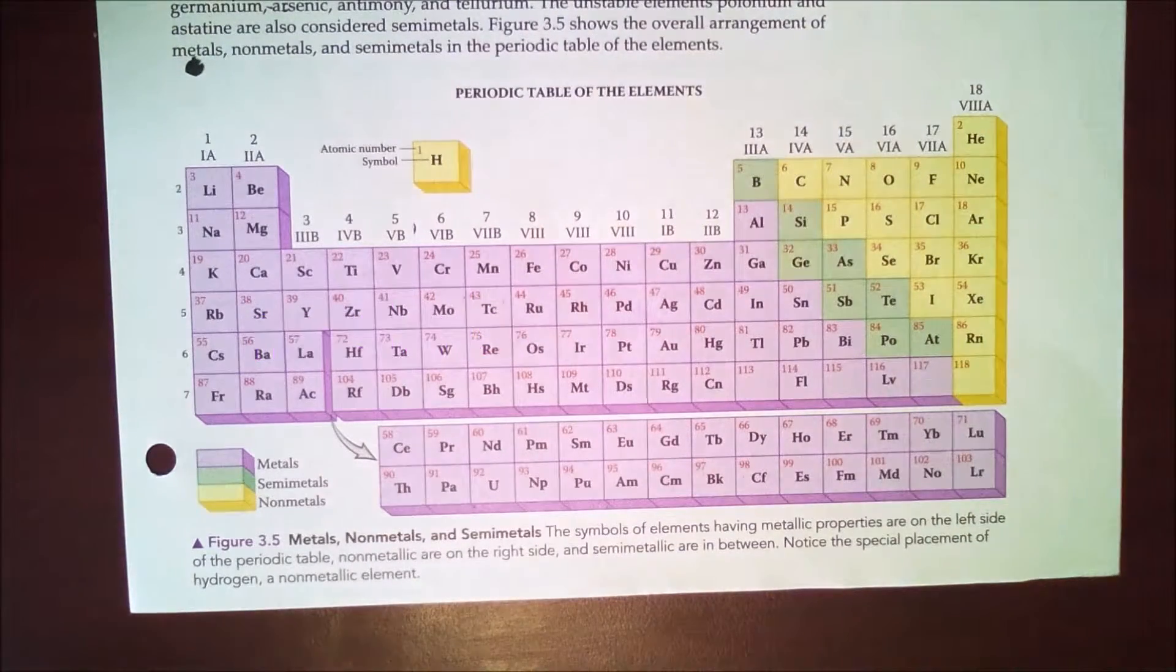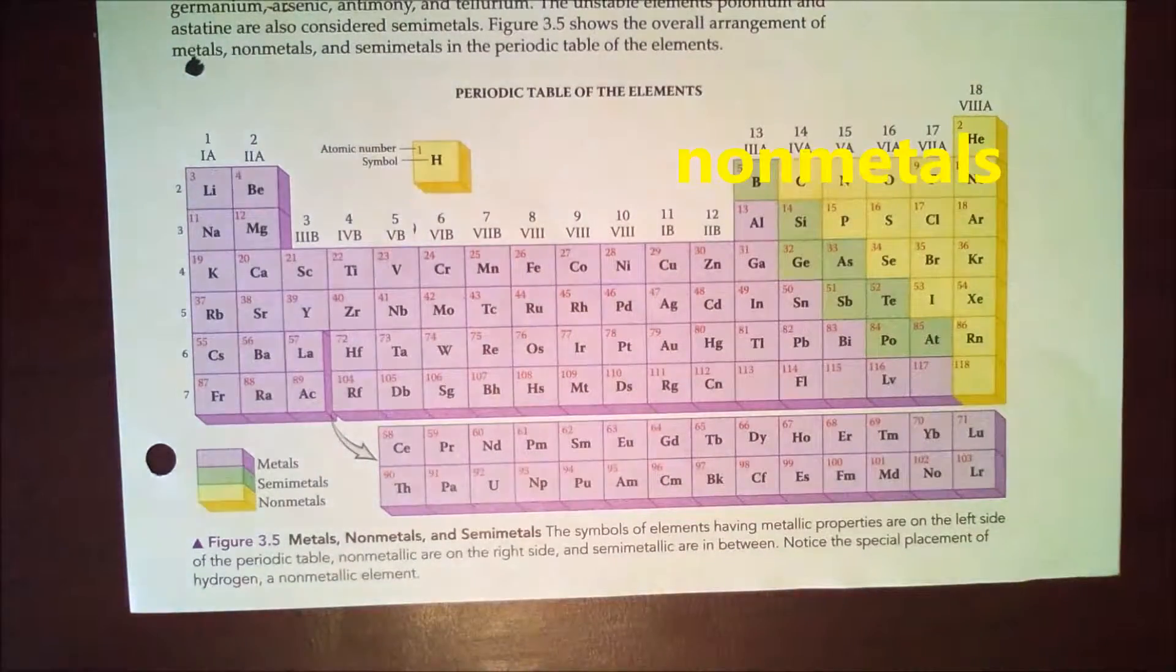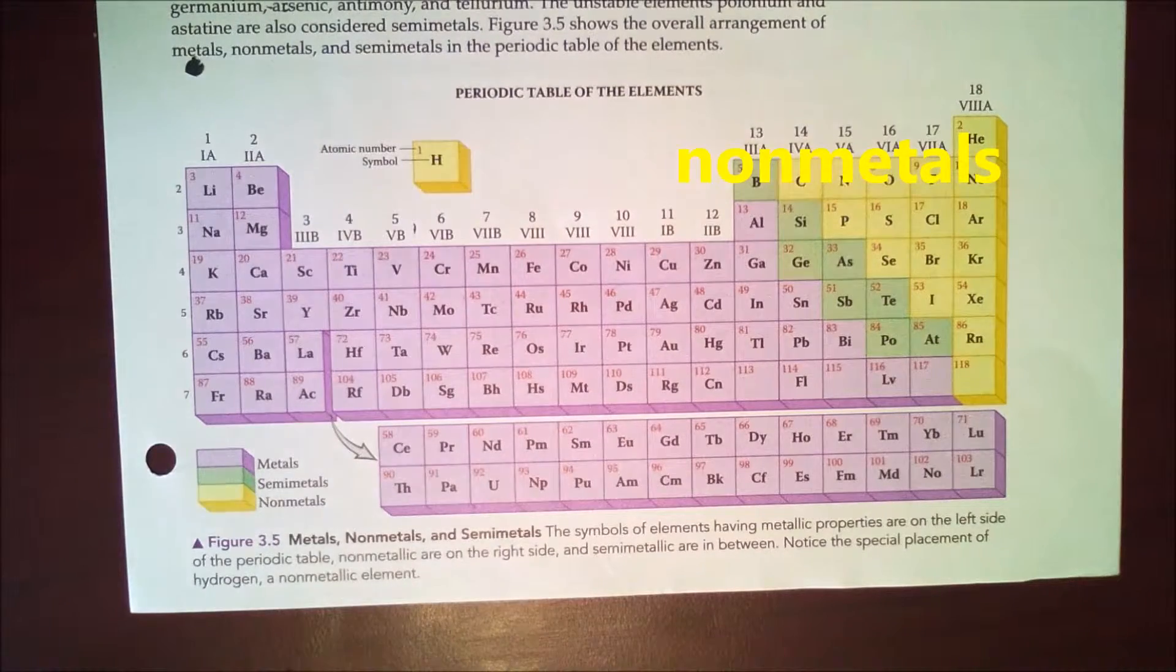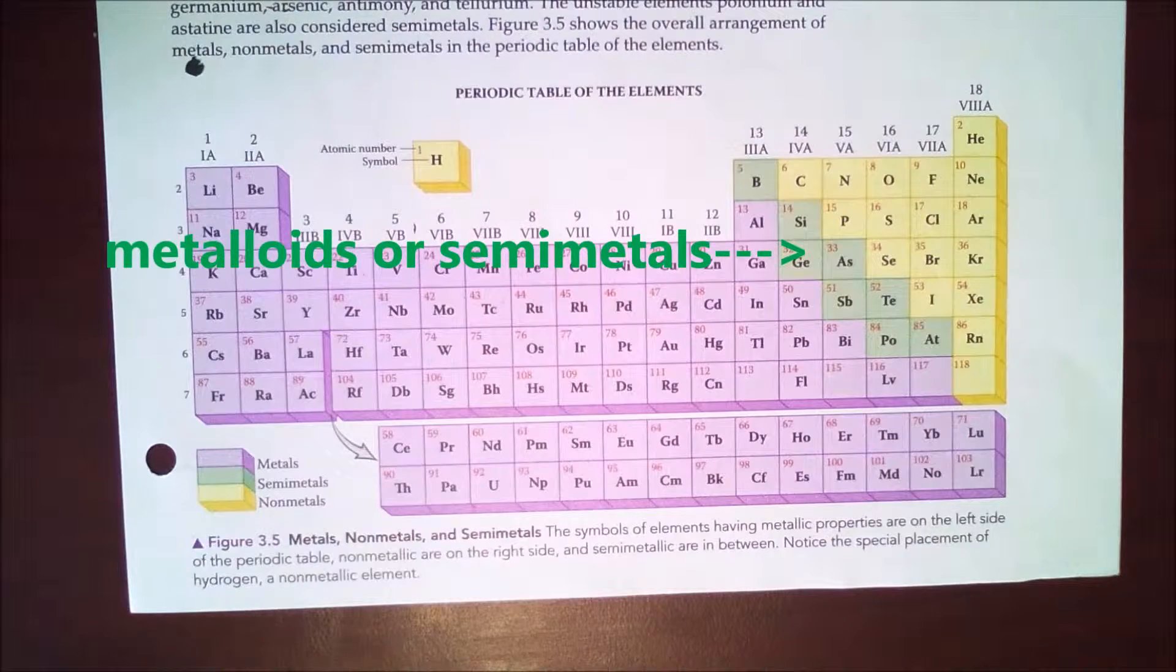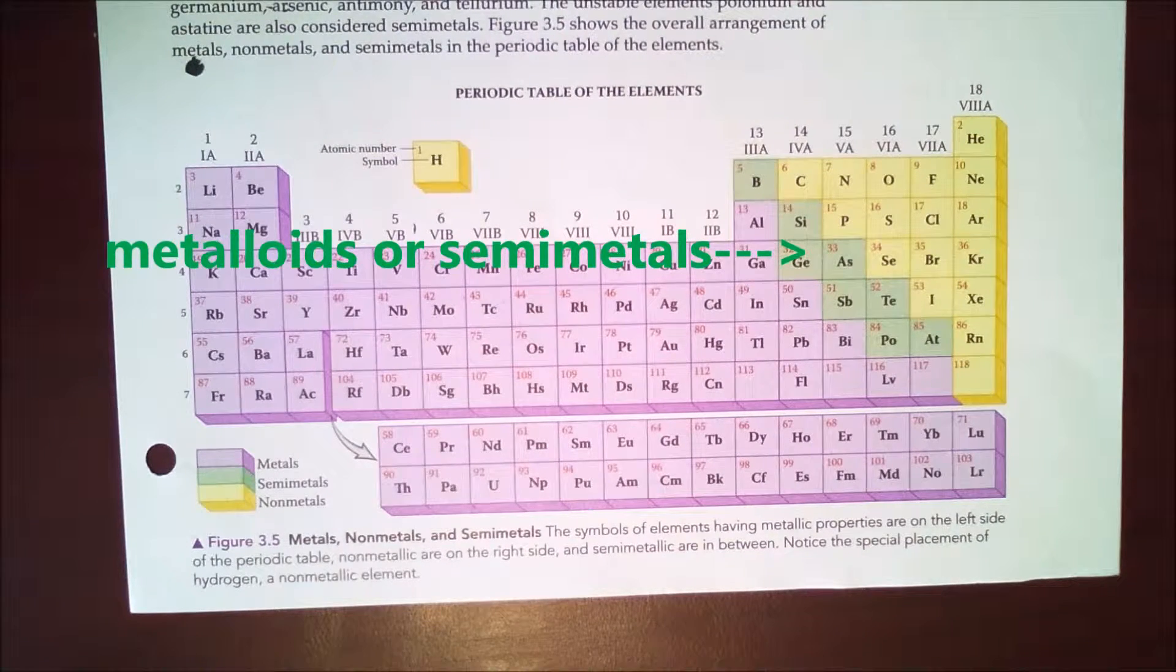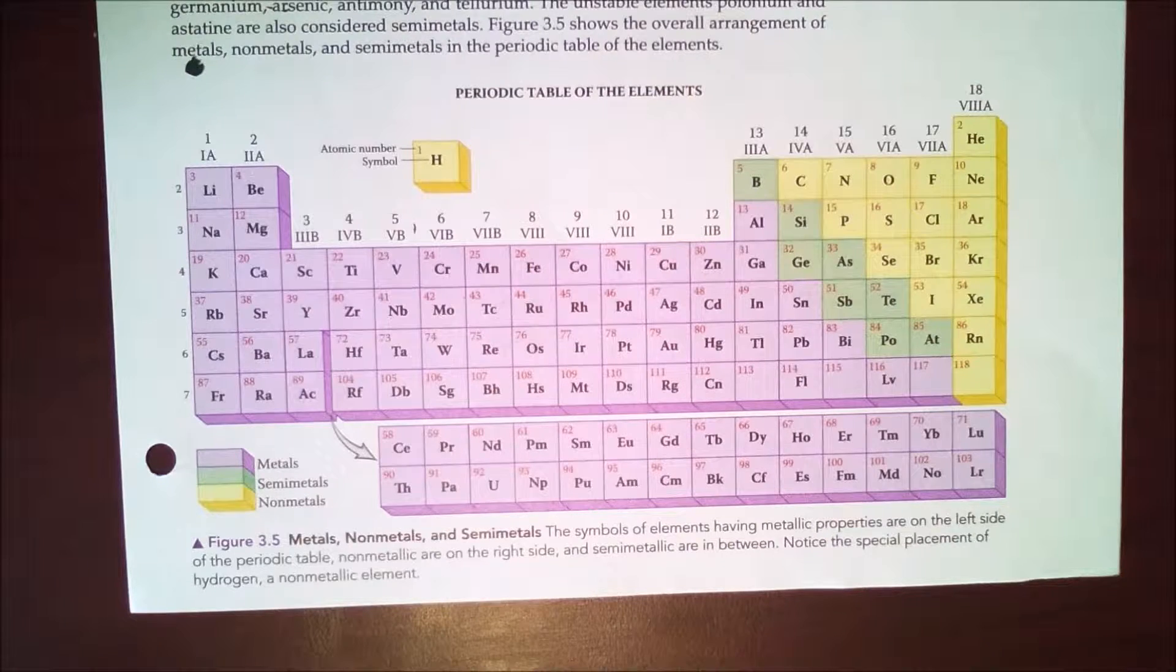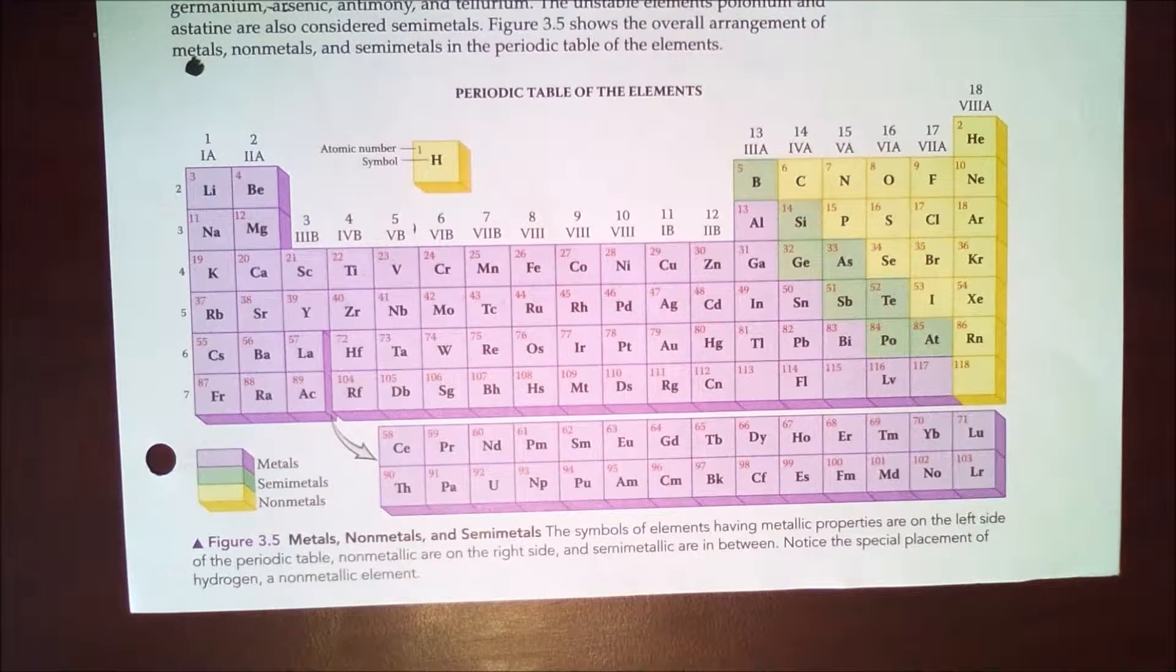To the right of the staircase, in this yellow section here, you'll notice that those are all your nonmetal elements, and then on that staircase are your metalloids, also known as your semi-metals. Now, it's going to be very important that you know where these metals, nonmetals and metalloids are located, because as I ask you questions on the next handout, you're going to want to have this image present in front of you.